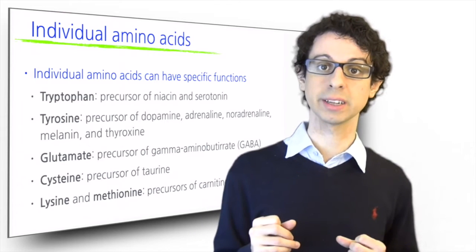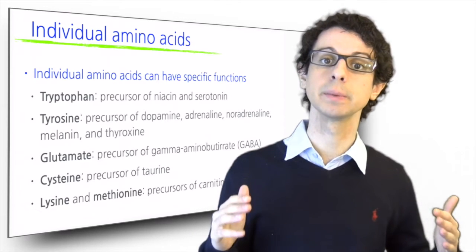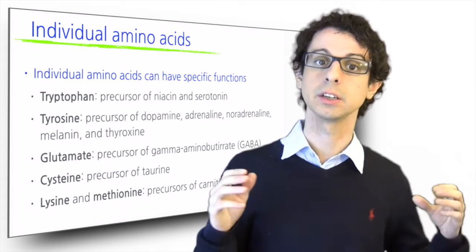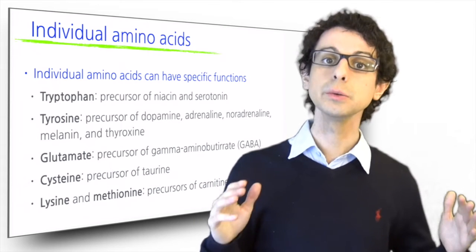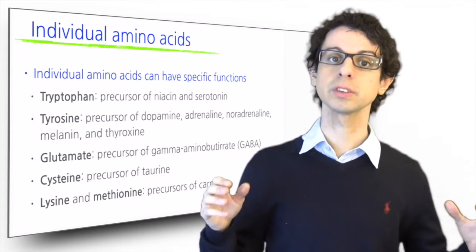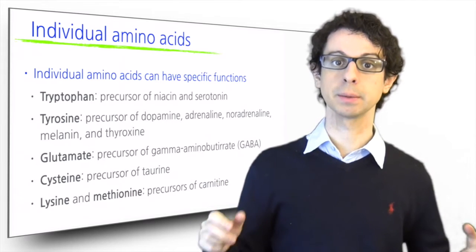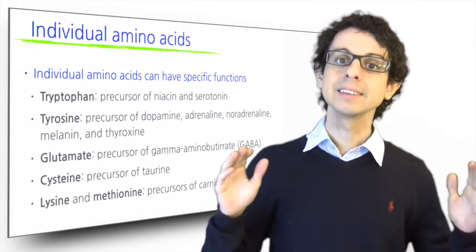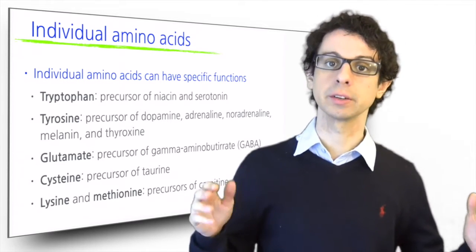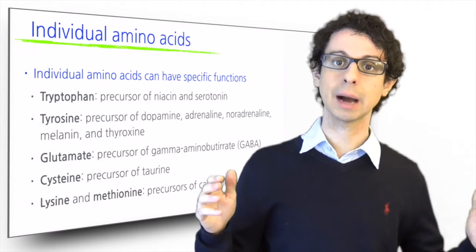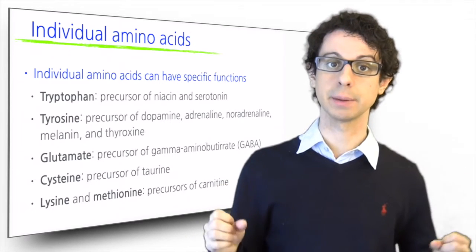The amino acid tyrosine is the precursor of neurotransmitters dopamine, adrenaline, and noradrenaline, as well as the skin pigment melanin, and the thyroid hormone thyroxine, together with iodine. Glutamate is used to build a neurotransmitter gamma-aminobutyrate by decarboxylation. Cysteine is used to make taurine, essential for bile acids, metabolism, muscle functioning, and many more.